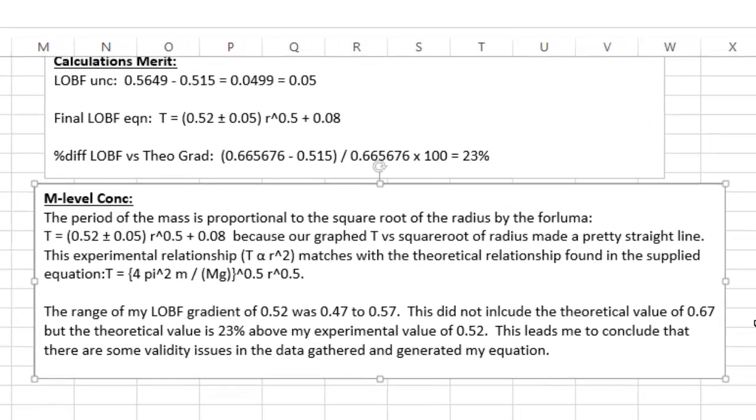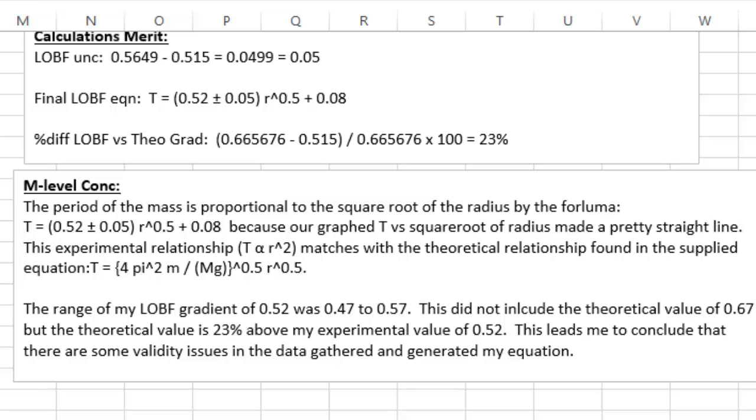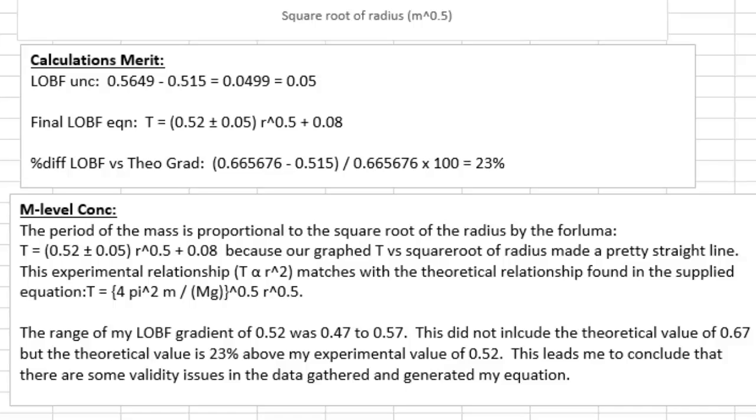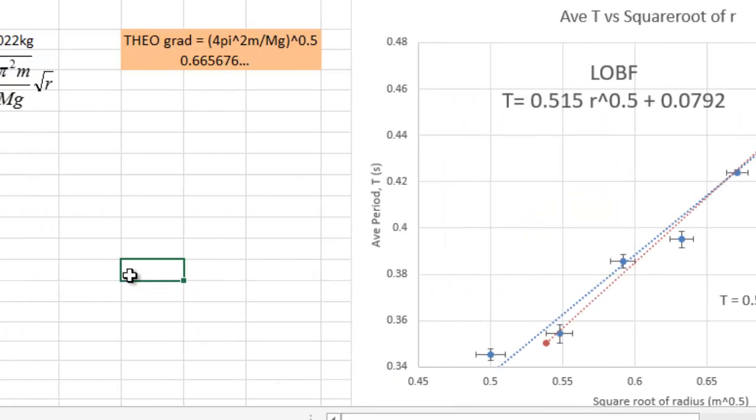And, here comes our conclusion. So, you can pause this and you can have a read. But, basically, the first statements are all about achieved. The second statements are all about merit. So, this down here that I've just highlighted is all about merit. You deal with the range of your line best fit. In this case, our theoretical did not, I repeat, did not fit inside that range. It's quite a bit above it. It's actually 23% above the gradient of 0.52. Now, if this happens, which can happen, it doesn't mean you fail. It just means, as this last statement says, you've got some issues with the data that was collected. Or, the uncertainty on the data that was collected. Gives you something to say in your discussion. So, there you go. Hopefully, this helps. There's your screenshot if you want to pause. There's your screenshot if you want to pause for your graph. And, then, play around with the page margins so this thing fits on two pages. Good luck.